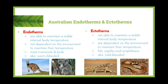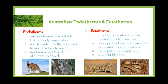Ectotherms are not able to maintain a stable internal body temperature and are dependent on the environment. They need to rely on the sun or other adaptations — behavioural, structural, and so on — in order to keep their internal temperature stable. Fish, reptiles, and amphibians are all mostly ectotherms, sometimes referred to as cold-blooded. Australian examples include the thorny devil, brown snake, green and gold bell frog, and Murray cod. Any type of Australian fish, reptile, or amphibian fits under this heading.